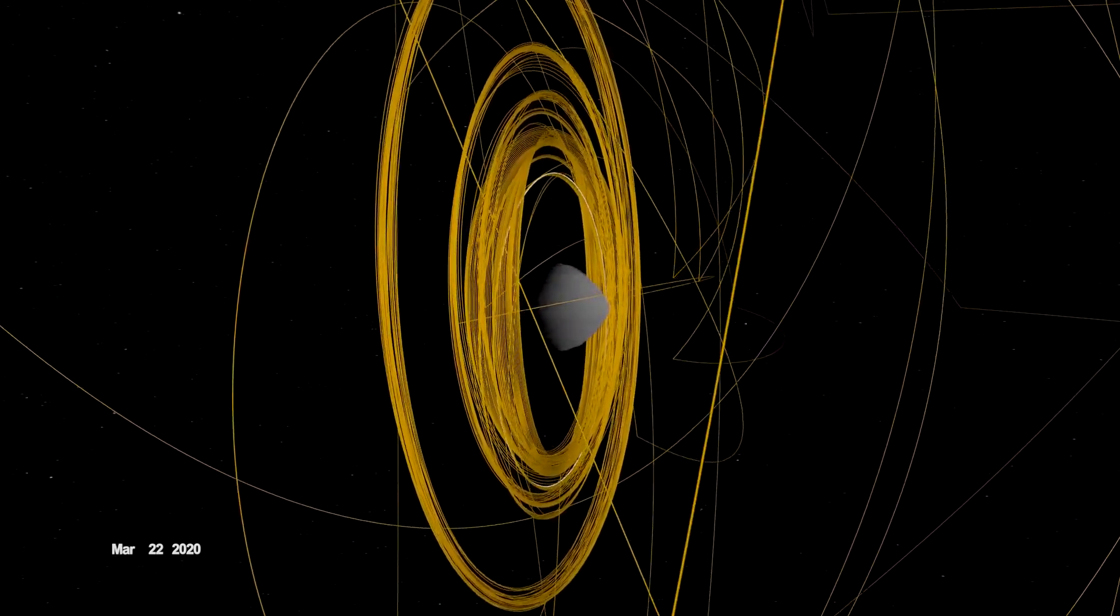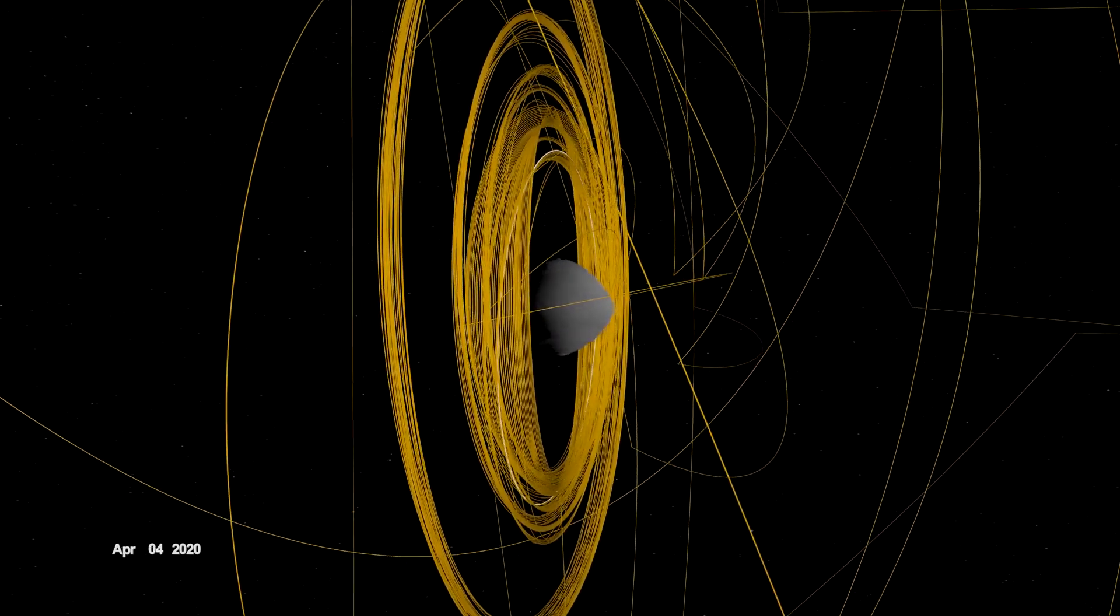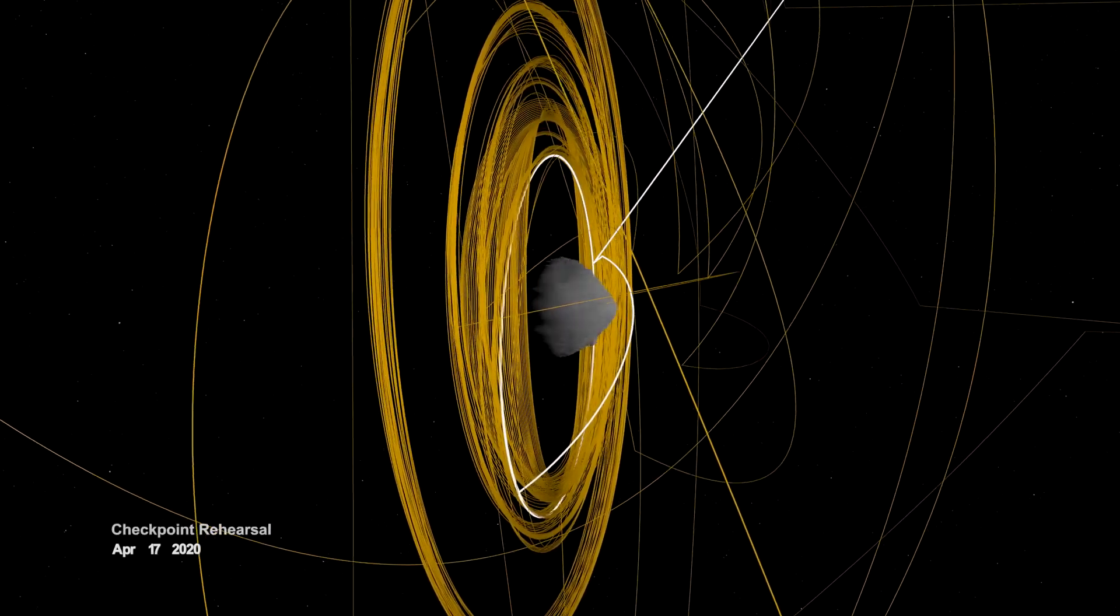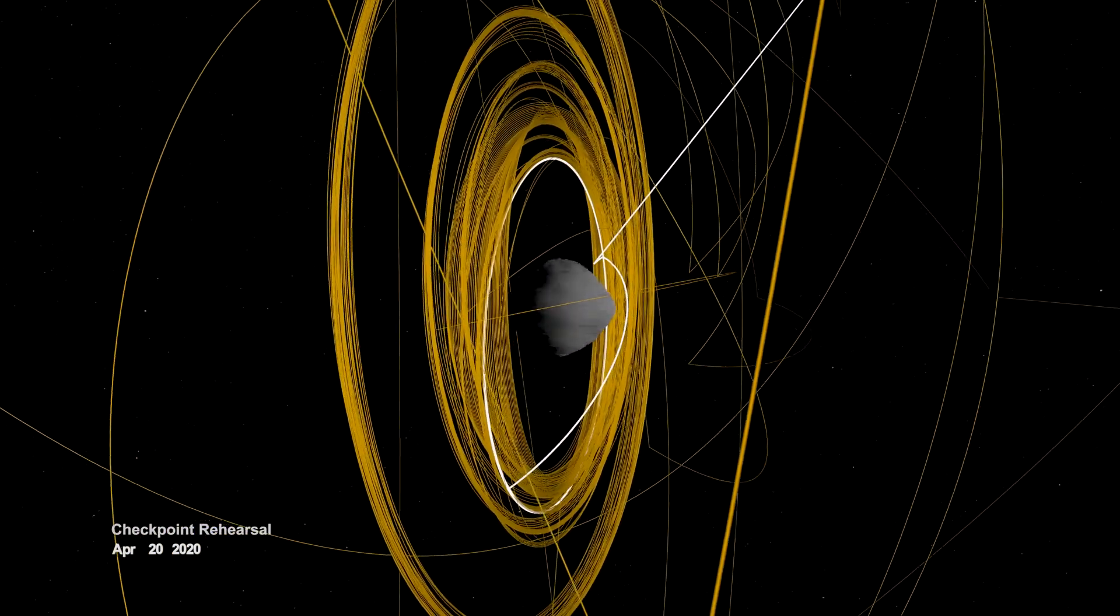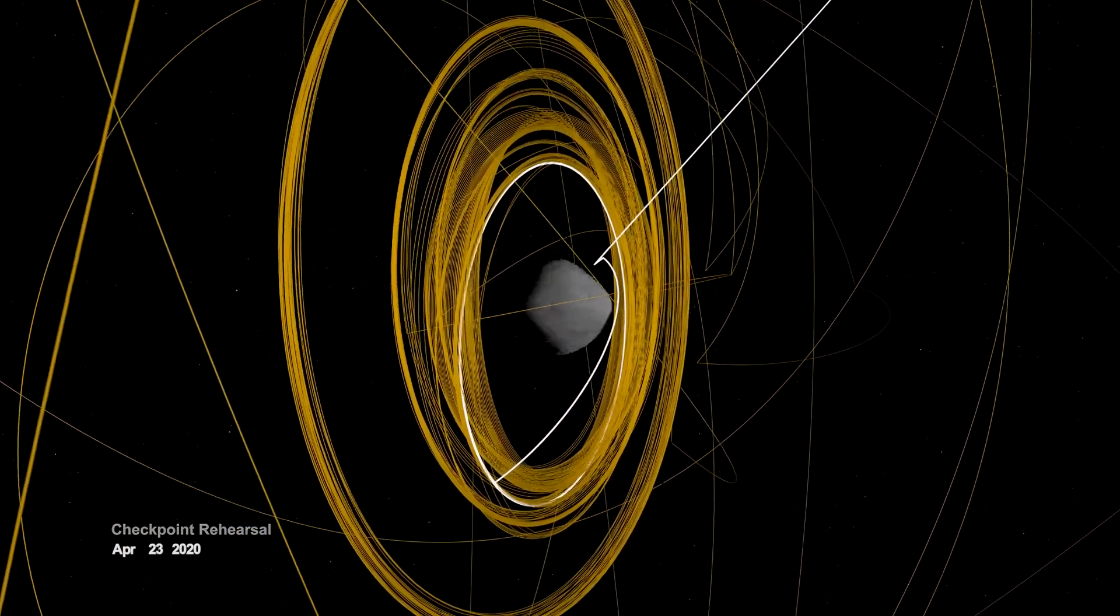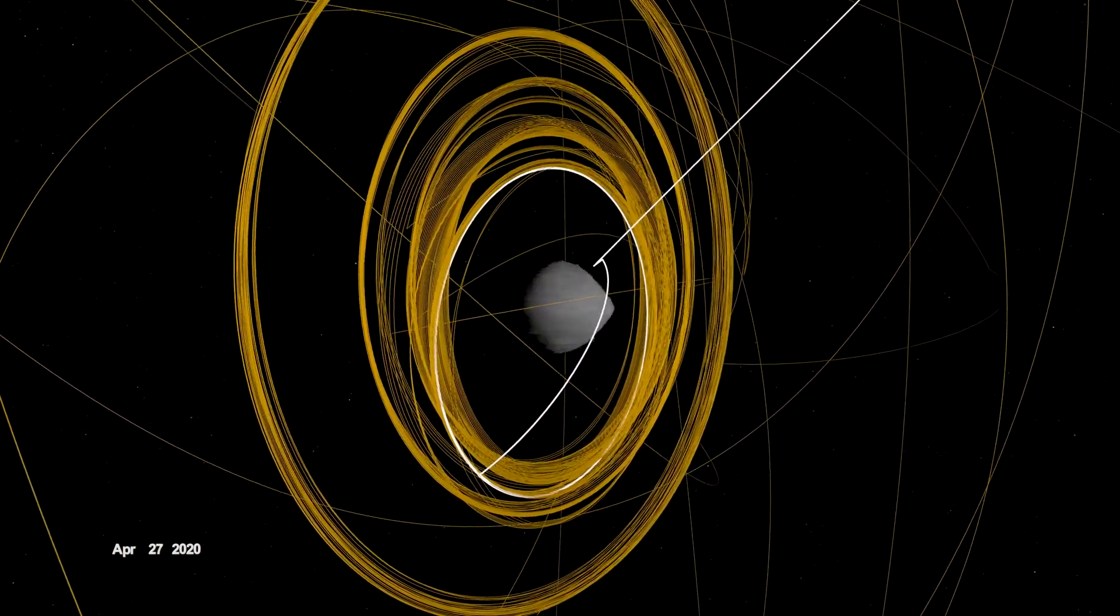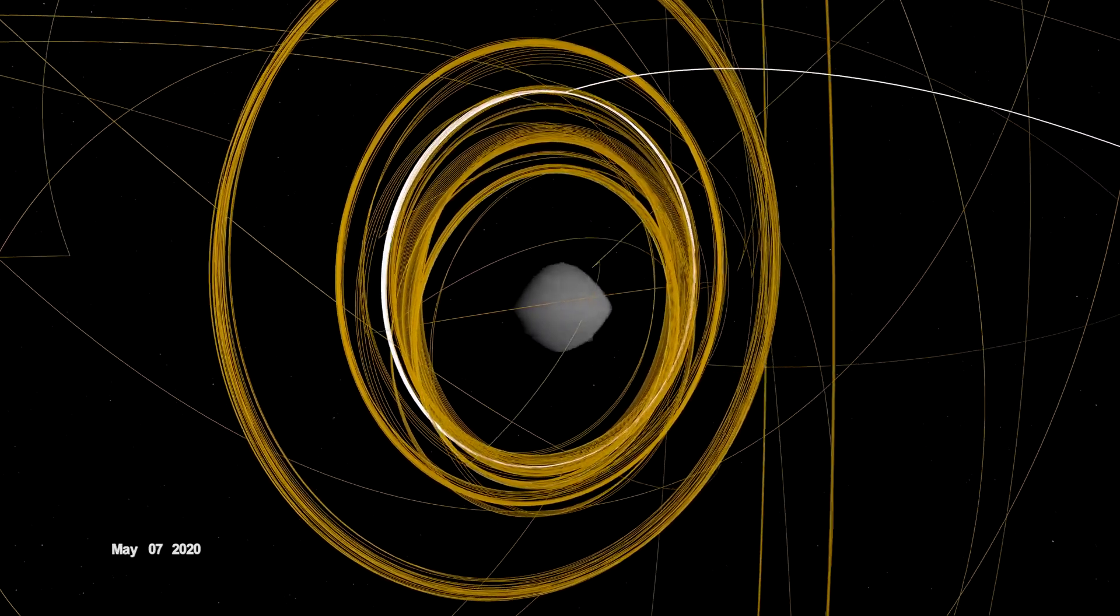In mid-April, OSIRIS-REx performed the first of two rehearsals prior to sample collection. It navigated to a predetermined checkpoint about 125 meters above Bennu, then descended to within 65 meters before backing away.